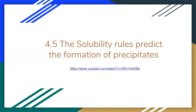Today we're starting with 4.5, which looks at another type of reaction. So far we've looked at different types of chemical reactions — synthesis reactions, decomposition reactions, acid-metal reactions, neutralization, acid-metal carbonates. Today we're going to be adding another type of chemical reaction to that list: a reaction known as a precipitation reaction.